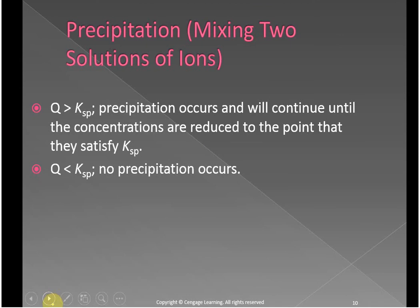Same as in previous chapters, guys. If you look at your Q, if your Q is bigger than your KSP, it means you have too much product. And so the way that it's going to shift that is you're going to have some precipitation happen. You're going to have it move to the left. And then it's going to continue to do that until your K and Q are equal. If Q is smaller than KSP, no precipitation happens because you actually have more reactants than products. And so if anything, it's going to shift to the right.